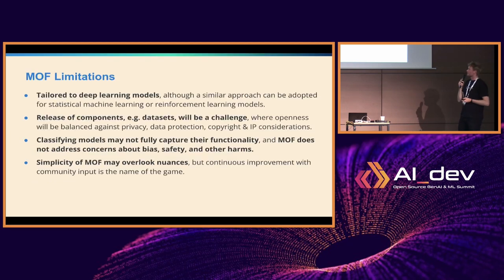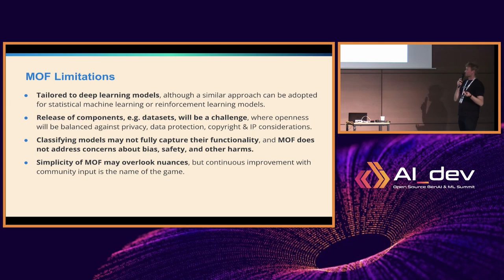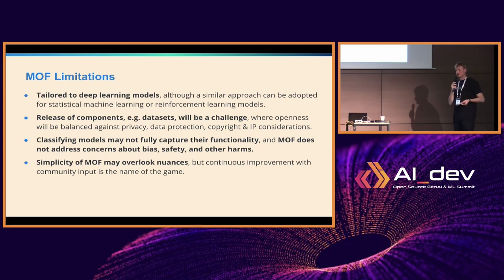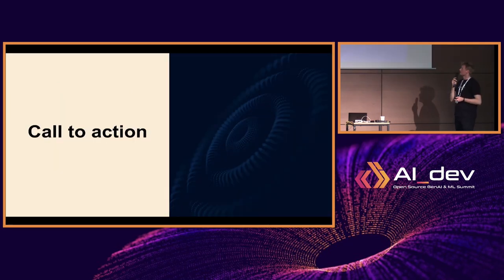There are also some limitations we want to be honest about. First, it's tailored to deep learning models — expanding it to other types of AI models is possible but not in its current format. Second, datasets are the elephant in the room: it will be really hard to get model developers to share those because of privacy, data protection, copyright, and intellectual property considerations. Third, classifying models according to our system may not fully capture their functionality, and MOF doesn't directly address bias and safety, although increased transparency can enable more crowdsourced auditing. Finally, it might be seen as too simple, but continuous improvement with community input is the goal — so if you have ideas, please get involved.